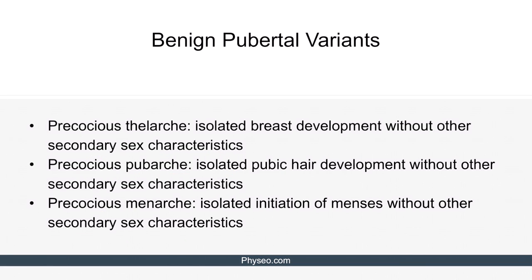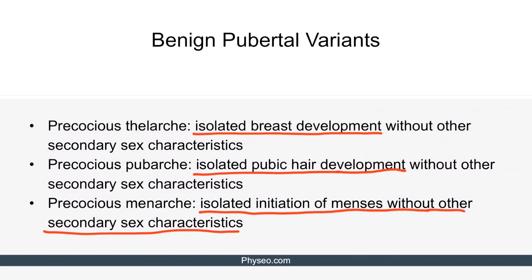Now let's move on to discuss benign pubertal variants. All of these are characterized by a certain isolated finding without other secondary sex characteristics. Precocious telarchy is isolated breast development. Precocious pubarche is isolated pubic hair development. And precocious menarche is initiation of menses without other secondary sex characteristics. These are all benign.